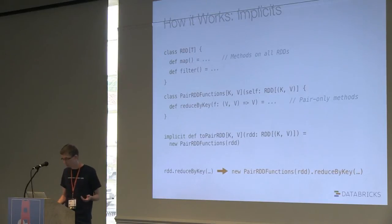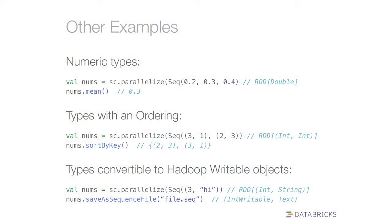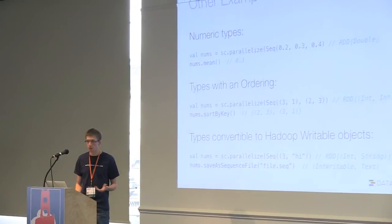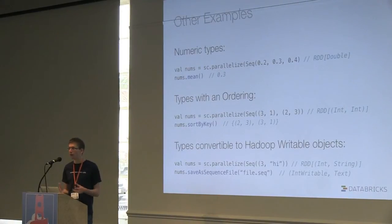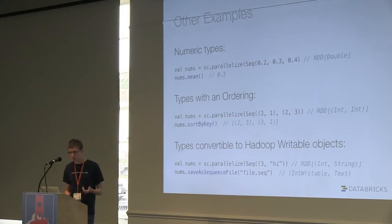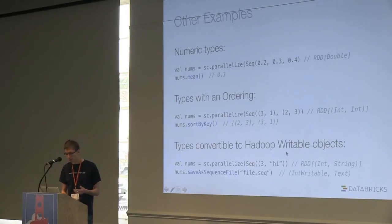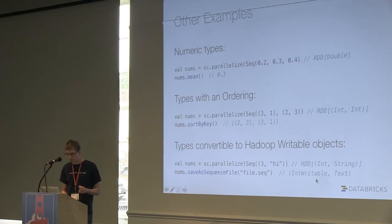Basically the compiler rewrites the code, and you can extend your RDD class with new operations based on the type inside it. We use this in lots of places — for key-value pairs, for numeric types with a mean or sum, for types with an ordering defined so you can sort by key. One of the nice improvements over Hadoop MapReduce is we use it for types you can convert to Hadoop's Writable type — a standard type for saving records into many Hadoop file formats like SequenceFile. If we know how to convert your standard Scala types, we automatically turn them into these Hadoop types.